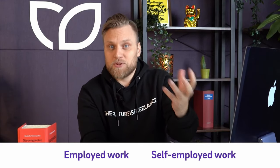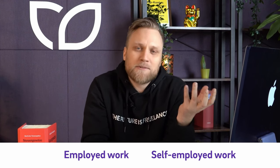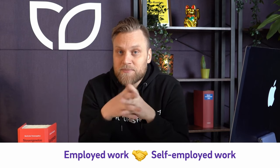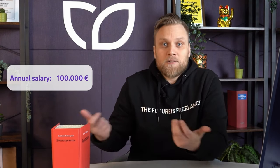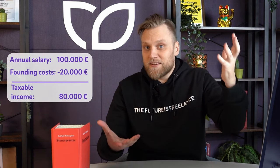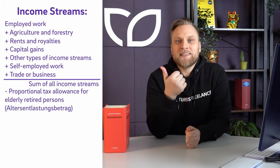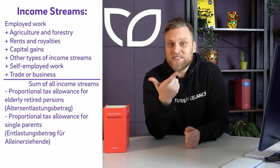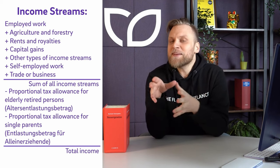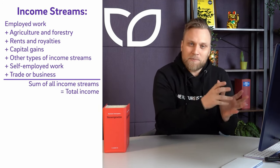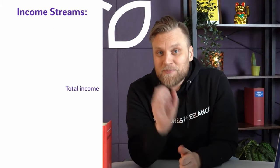What you can do is offset self-employment losses. If you have a salaried job and earn €100,000 gross annual salary, you can start a business in parallel and offset a €20,000 loss in the first year. This means you don't have to pay taxes on the full €100,000, but only on the difference of €80,000 — you just need to pay taxes on the amount you actually calculated as income. When we calculate the sum of these earnings, we obtain the total amount of earnings. By deducting the age relief amount and the relief amount for single parents, we arrive at the overall income amount.